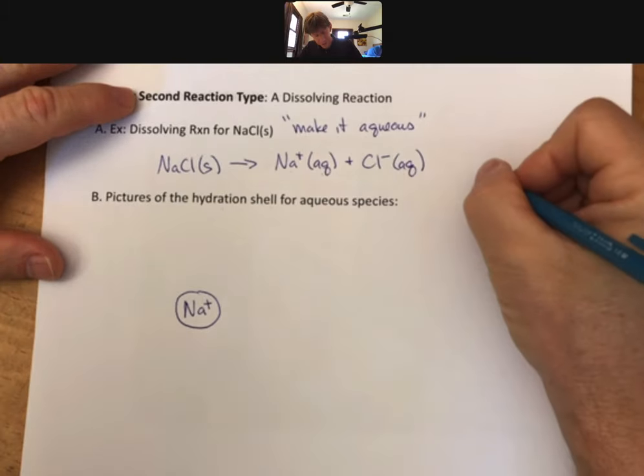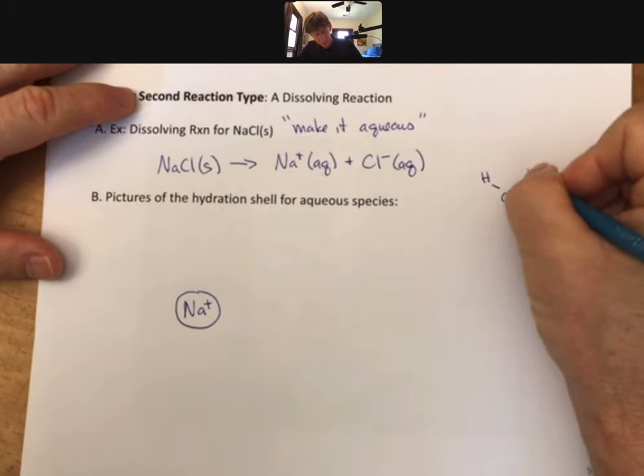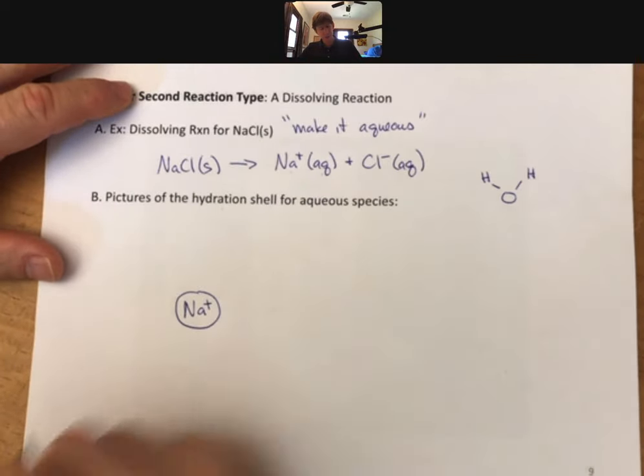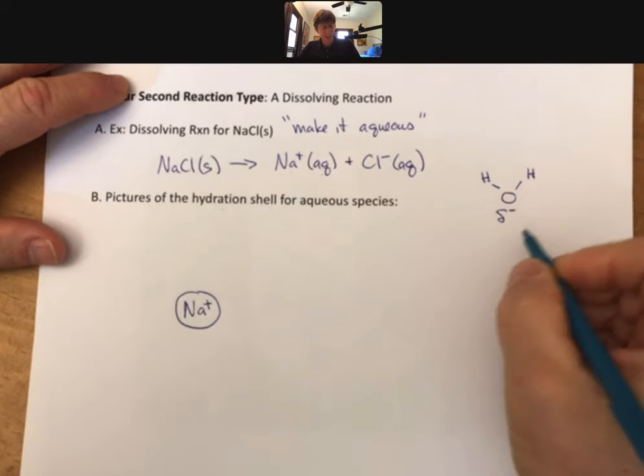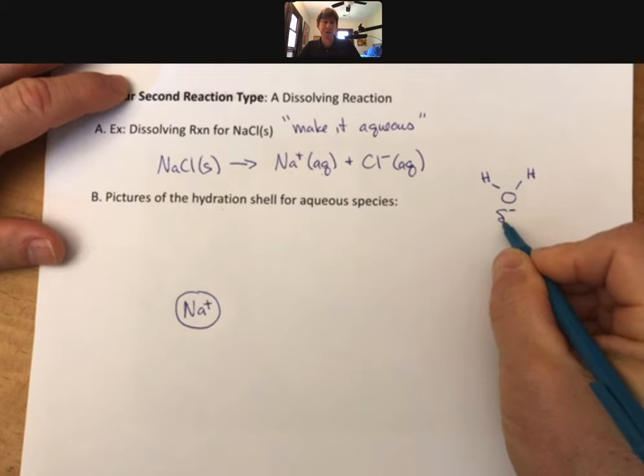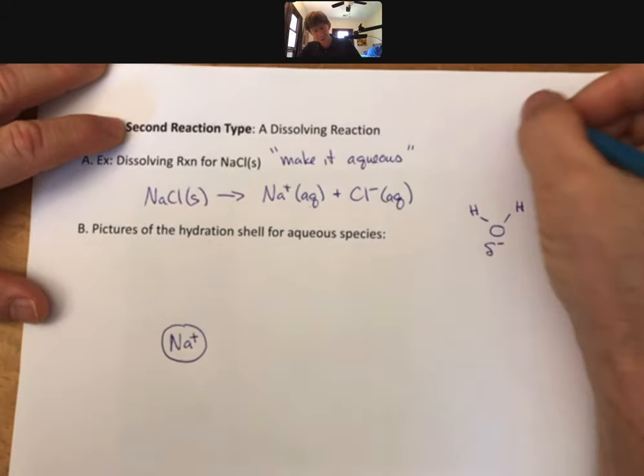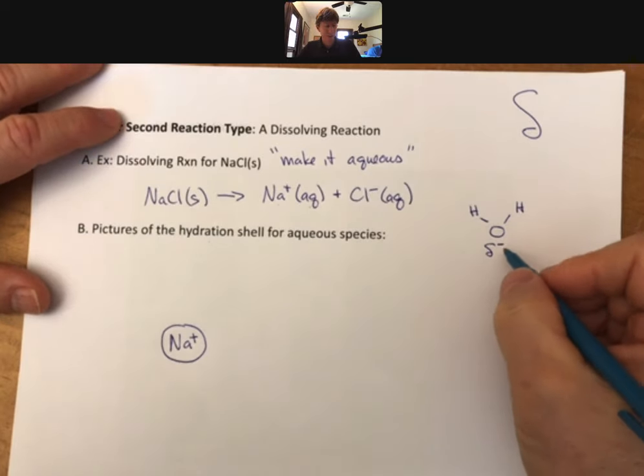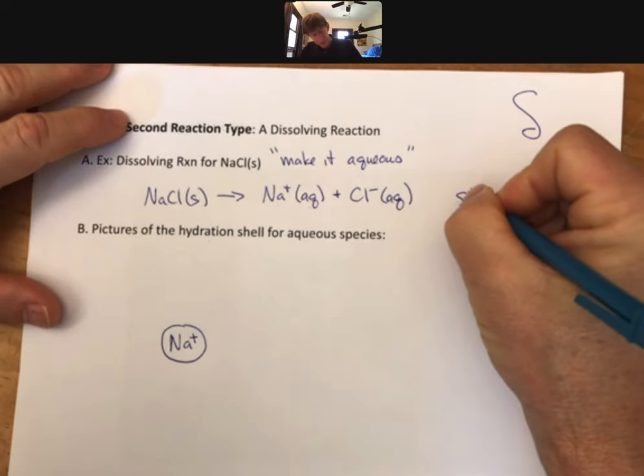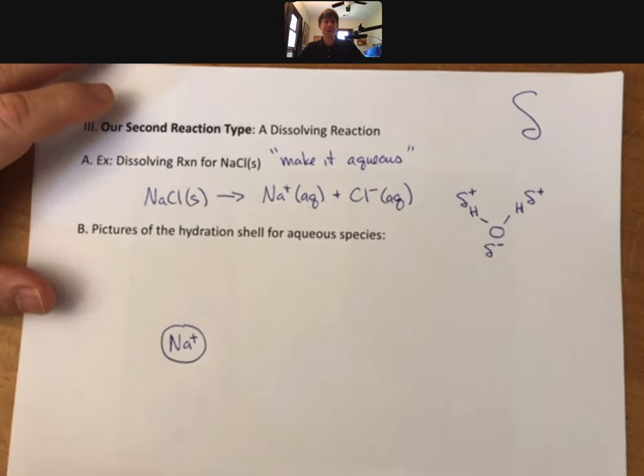When we draw water, we will draw it with a bent shape. This oxygen is partially negative. This is a lowercase Greek letter delta, which means that it's partial, partial negative here. I typically draw it like a squiggly D with a line at the bottom. As long as you draw something and put a minus sign next to it, I'm okay. This hydrogen is going to be partially positive. So is this hydrogen going to be partially positive.